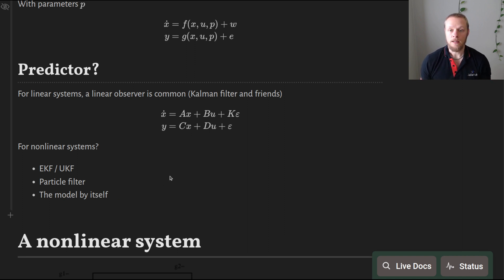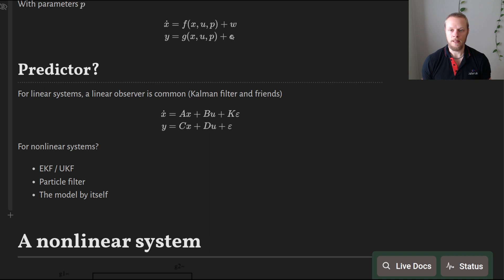Here we will use an approach based on an unscented Kalman filter for a non-linear system. The unscented Kalman filter takes in information about the covariance of w and e and figures out an optimal — or approximate optimal — correction of the state.